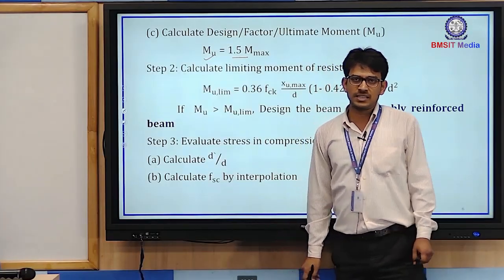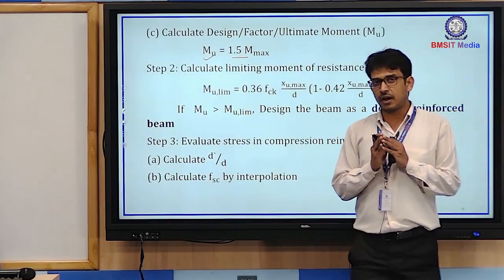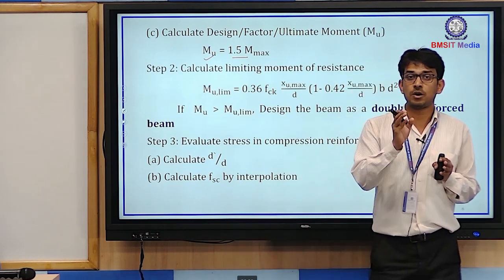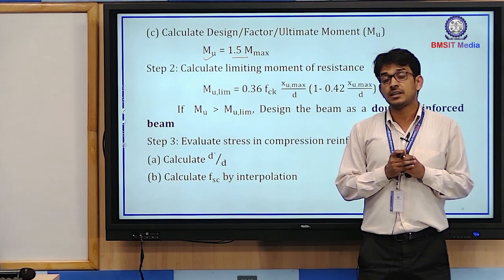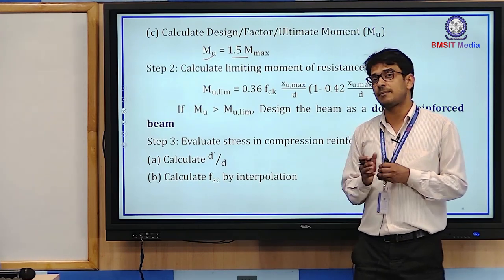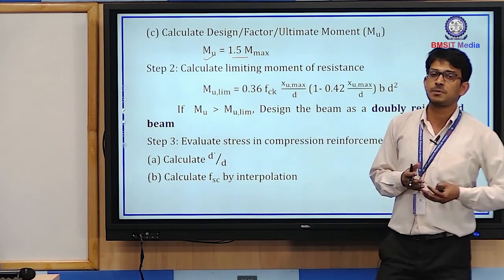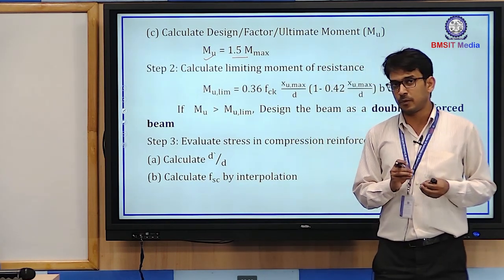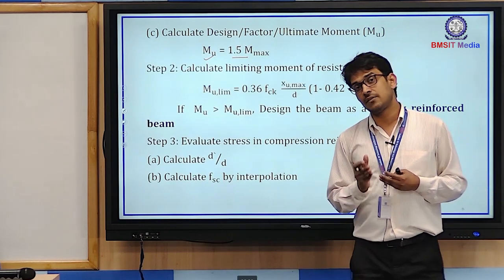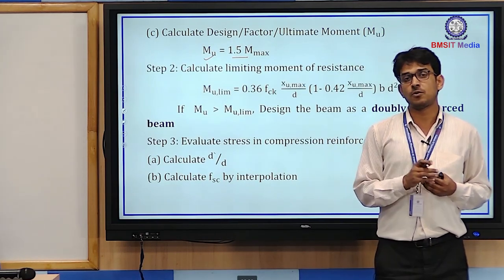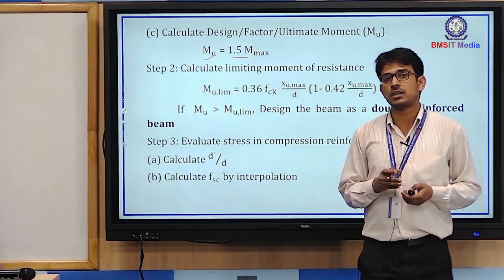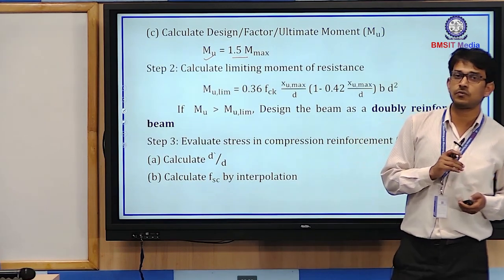The calculation of Step 1 depends on the type of question. If the ultimate moment is directly given, skip Step 1. If only maximum moment is given, multiply by 1.5. If load is given, first calculate maximum moment then get ultimate moment. Ultimately, Step 1 gives us the ultimate moment Mu.